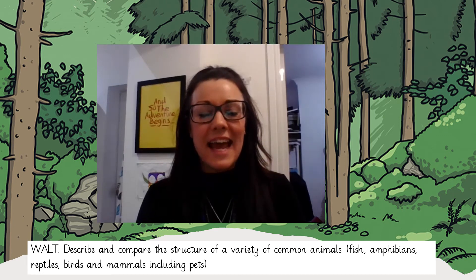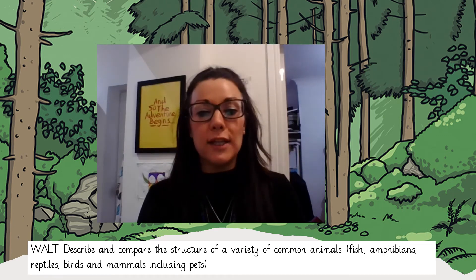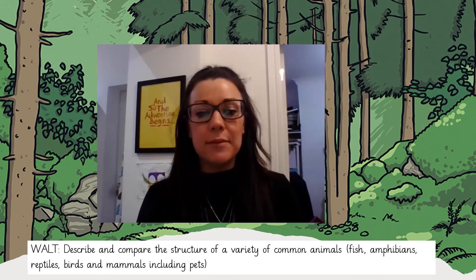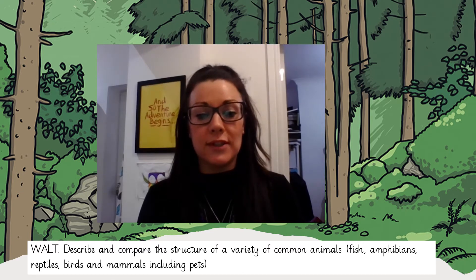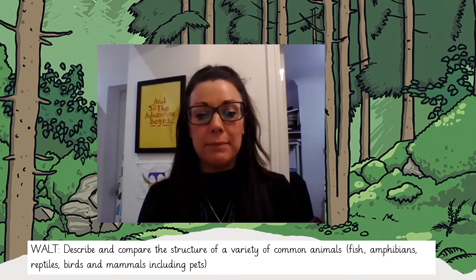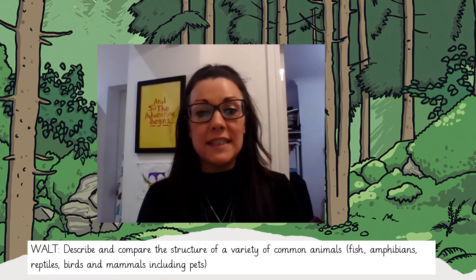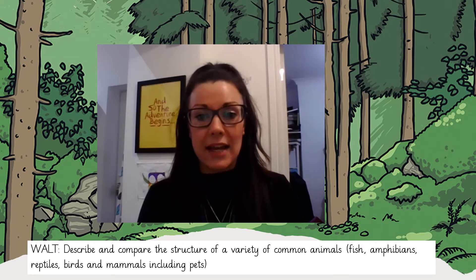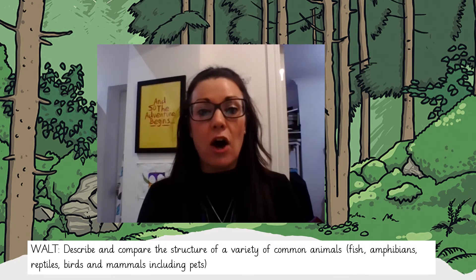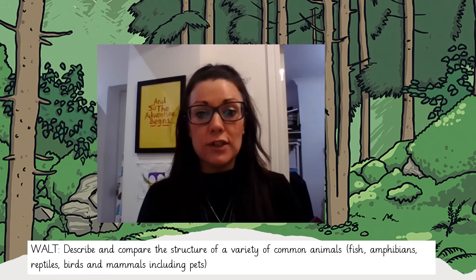Hello Year One. Today in Science we are going to take a closer look at a variety of different animals. These animals are from the classification groups we have already learned about: fish, amphibians, reptiles, birds and mammals. We're also going to take a closer look at their diets and see if they are carnivores, omnivores or herbivores.